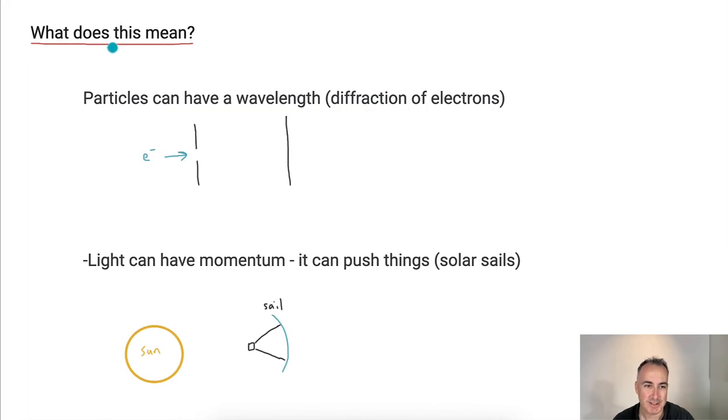Alright, let's keep going. So what does this really mean? Particles, it sounds really weird, they can have a wavelength. In other words, electrons can diffract. And no, it's only waves that can do that. If electrons fly through, you have these spots of lots of brightness and not so much. So, yes, they can actually diffract. It's true.